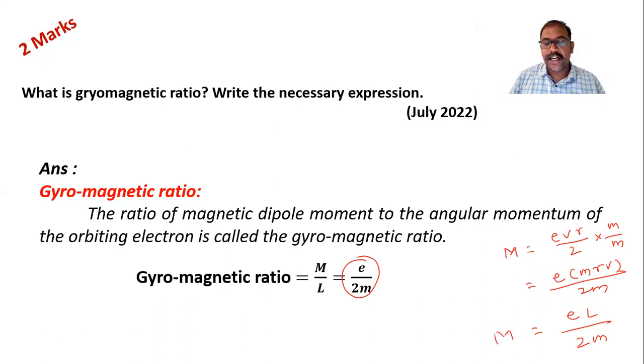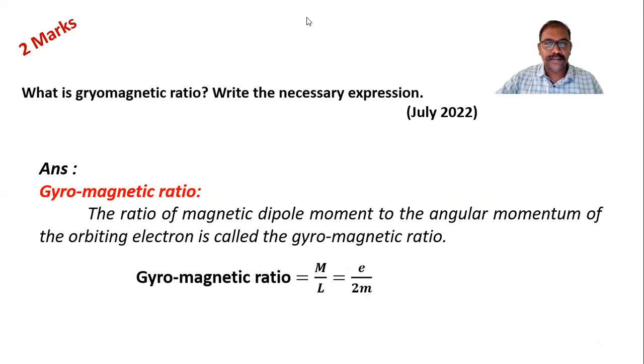So this is the formula of magnetic dipole moment. Then we can shift this L to this side. So M by L equals E divided by 2M. Thank you.